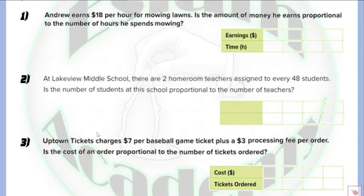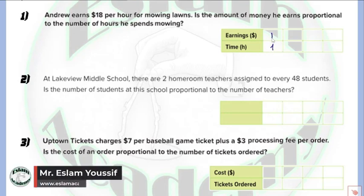In problem number one, we have Andrew earning $18 per hour. We need to find if this relation is proportional or not. First, we need to complete the table — how many dollars he will earn per hour. If he works for one hour, he will earn $18.